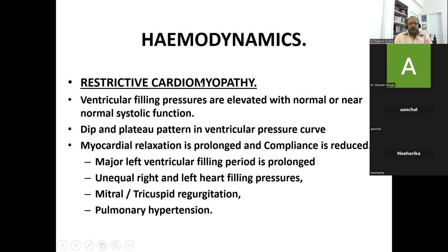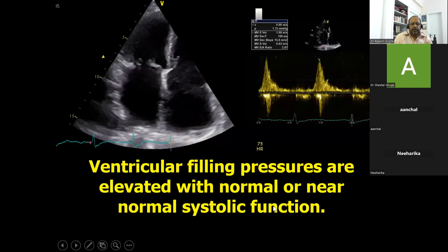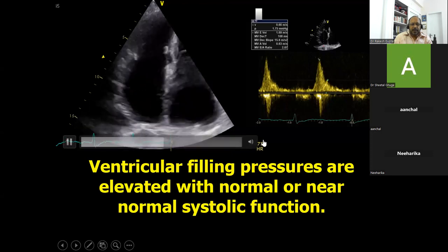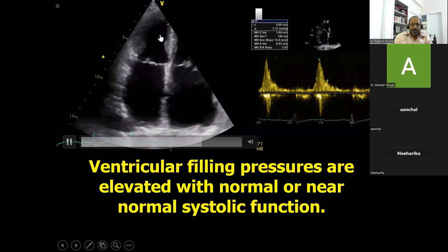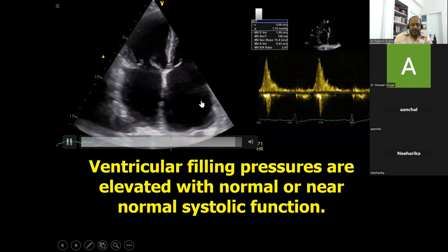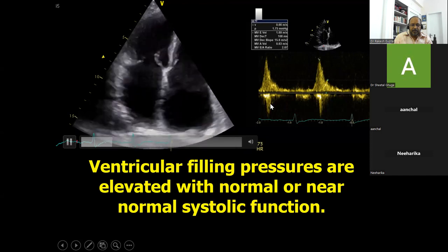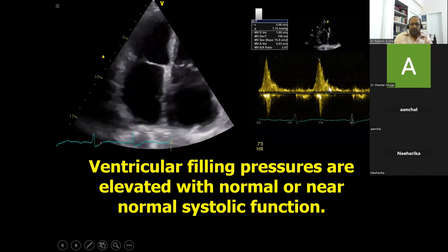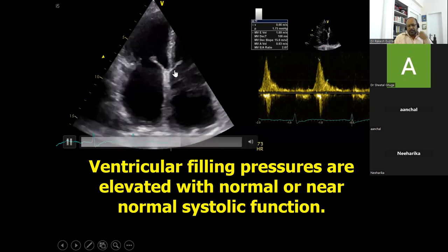Hemodynamics in restrictive cardiomyopathies: ventricular filling pressures are elevated with near-normal AV systolic functions. Myocardial relaxation is prolonged and compliance is reduced. Filling pressures are very, very high. You can have significant mitral and tricuspid regurgitation and significant pulmonary artery hypertension. Look at the dilatation of LA and RA, no ventricular interdependence, and the mitral flow pattern: tall E, small A — this is the majority pattern.